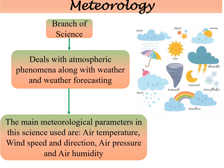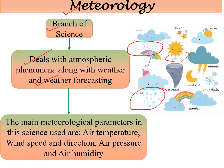So what is meteorology? Meteorology is a branch of science that deals with atmospheric phenomena along with weather and weather forecasting. There are rainy seasons, sunny seasons, snowflakes, rainbows, thunderstorms, and many more kinds of phenomena we see in our atmosphere. All these kinds of things are dealt with by the branch of science called meteorology.